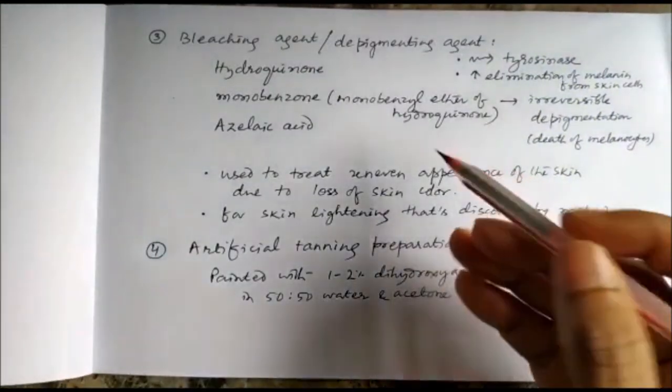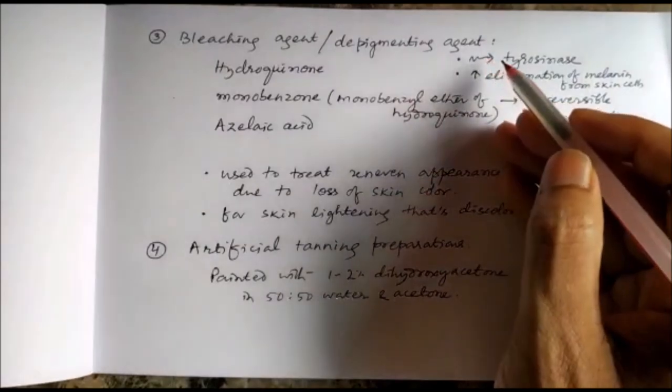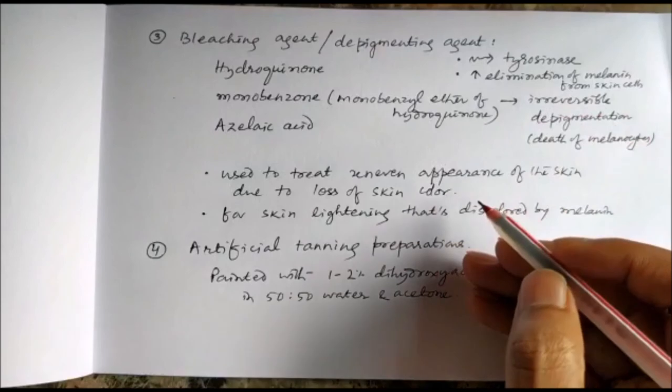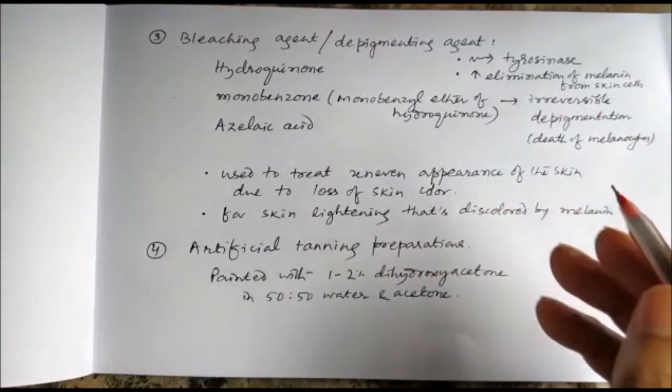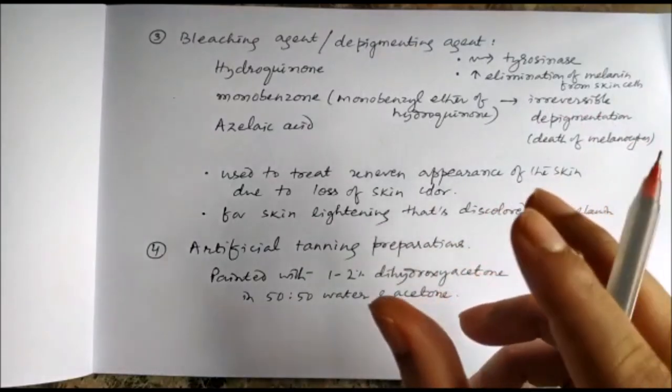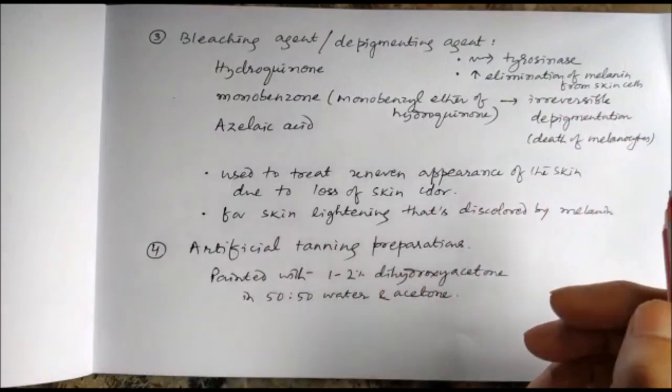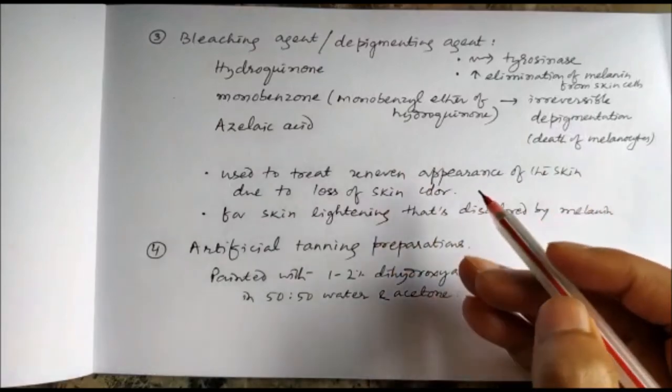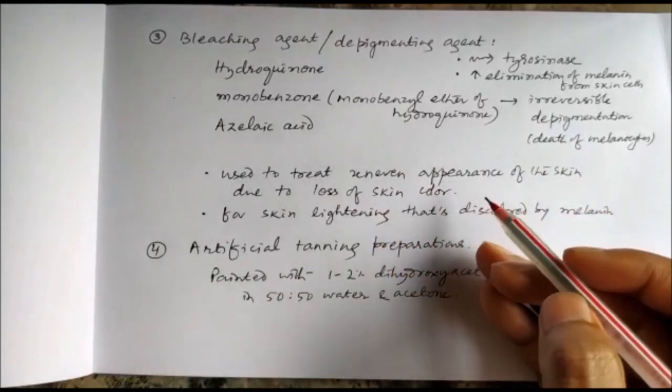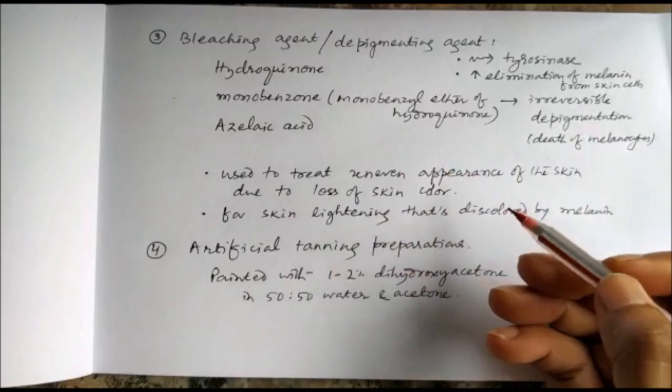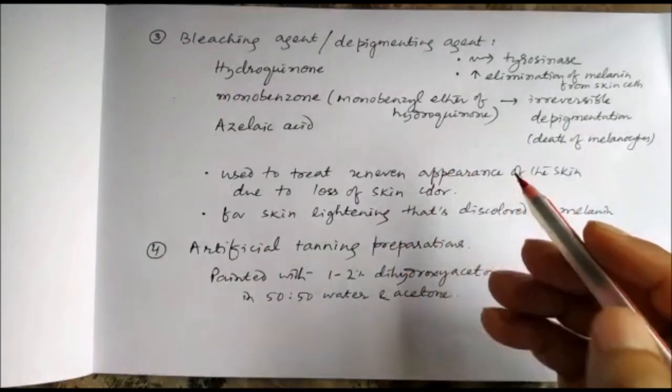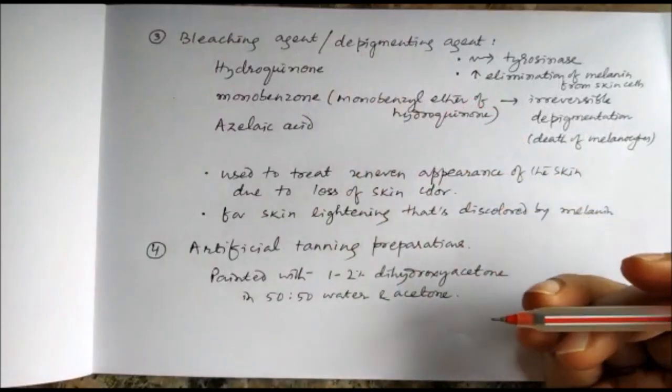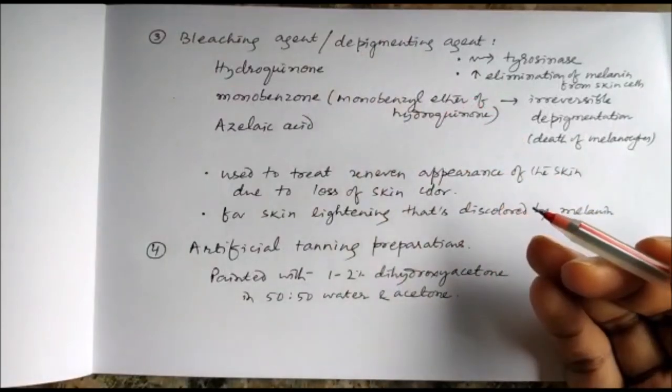We can use bleaching agents or depigmenting agents because in vitiligo patients there is uneven appearance of the skin due to loss of skin color in patches in some areas. By using bleaching agents, the whole body surface can be depigmented and there will be uniform color. In some patients, these agents are used and they actually lighten the skin.